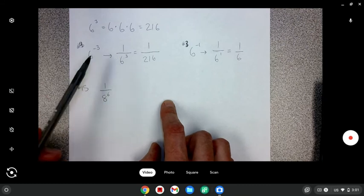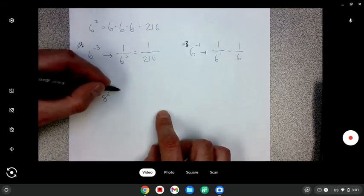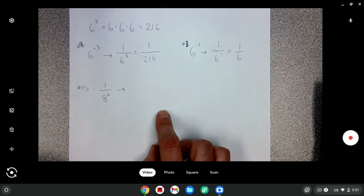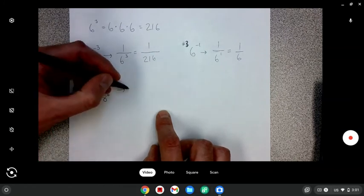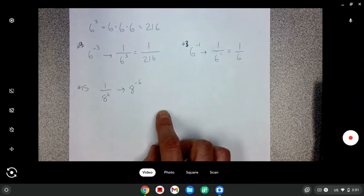One over six to the third gives us the same as six to the negative three. These represent the same thing. So one over eight to the sixth, if I wanted to put that into a negative exponent, I'd write that as eight to the negative six.